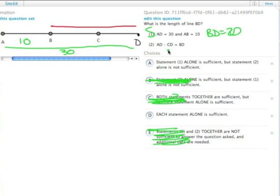Statement two tells us that AD minus CD, so the full length minus the last little bit, equals the length of BD, but there's no numbers at all in here.